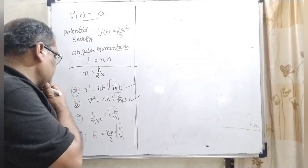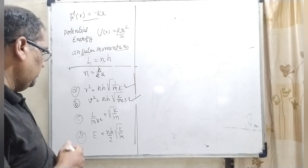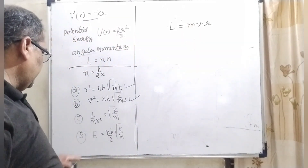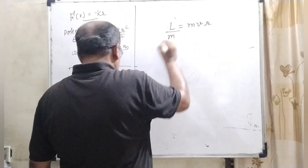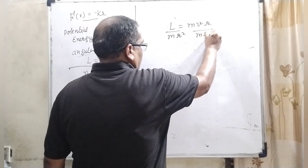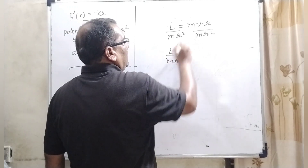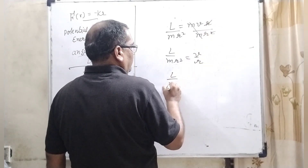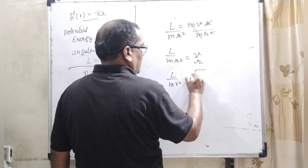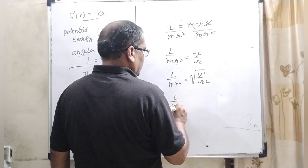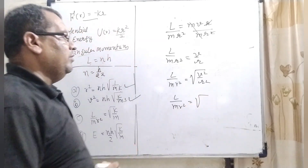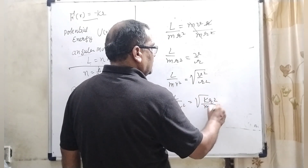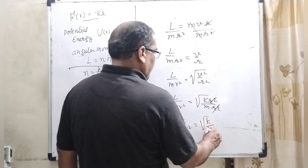Now let's check option C: L/mr² = √(k/m). We know L = mvr. Dividing both sides by mr²: L/mr² = mvr/mr² = v/r. From our equations, v² = kr²/m, so v/r = √(k/m). Therefore L/mr² = √(k/m), and option C is correct.